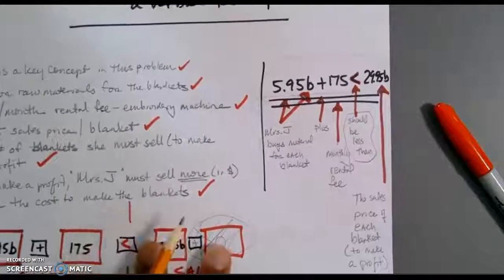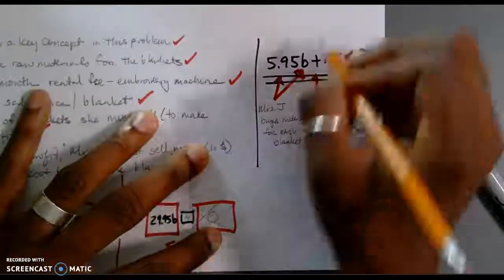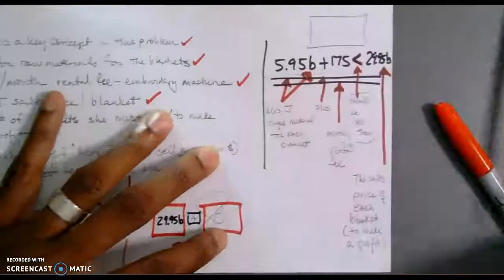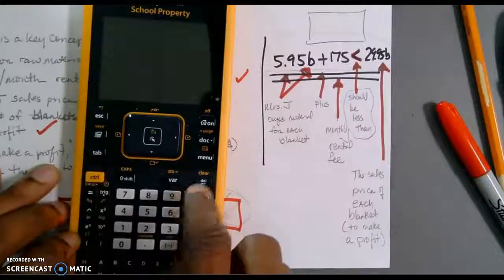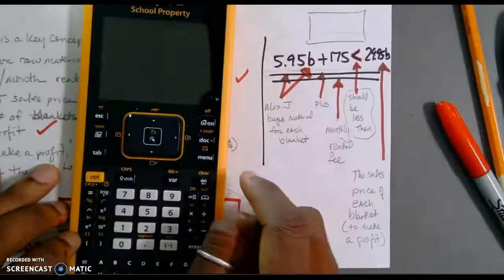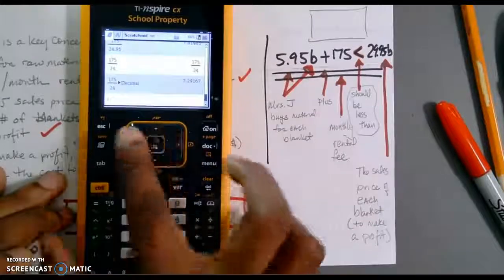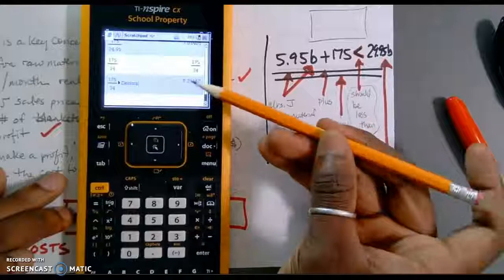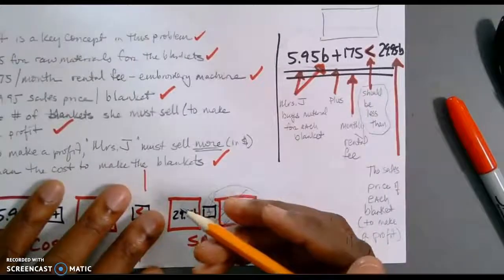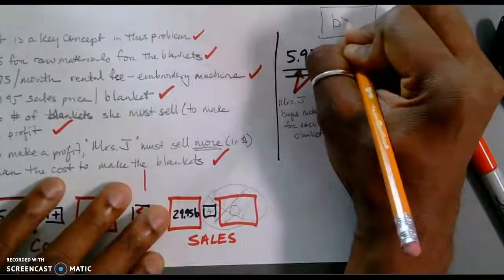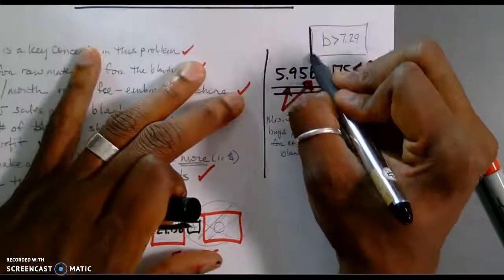If we had gone through to solve this, this would have come up to be, and I'm going to use my handy-dandy trusty calculator, it should have been, in essence, if I can turn this on, I already have it here. I did this before. It came out to be 7.29167 blankets. She must make more than, so B should be more than 7.29, but we need to put this into context. Can she make 7.29 blankets?